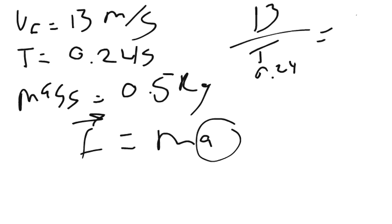So your change is 54.16, or 54.2, 54.2 meters per second squared. So you plug that in here: 0.5 times 54 equals 27.08.